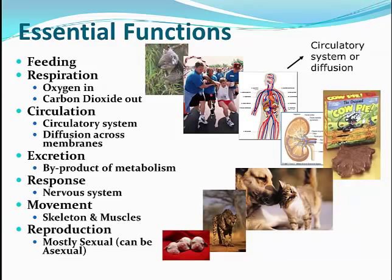There are a few essential functions that animals have. Feeding — as mentioned, we're heterotrophs, so we have to feed on food to get it. We do respiration, so we breathe in oxygen and release carbon dioxide. We also have a circulatory system, which helps with circulation of blood through our bodies and also the diffusion across our cells' membranes. We do excretion, which is a byproduct of metabolism — we eat food, break it down, and have to get rid of the waste.